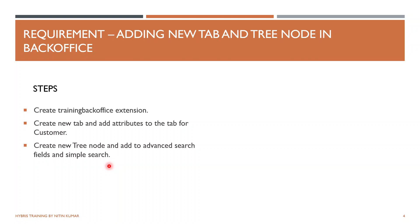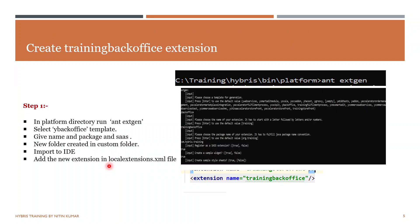Starting with the first step — creating a training back office extension. This is a custom name I have provided; you can provide any name such as xyz back office extension. The second step will be creating a new tab and adding attributes for the customer model. I have taken the customer model as a base and will be modifying the customer layout for back office.